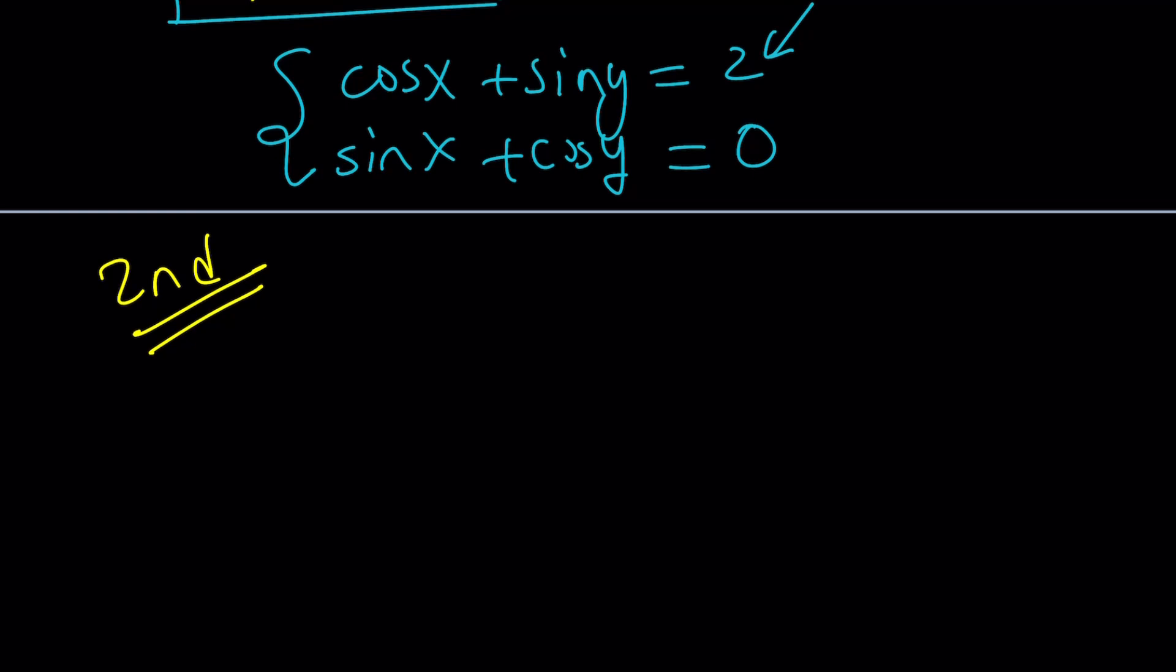Let's go ahead and take a look at the second method. And then we'll compare, and you'll get to decide which method you like better. Again, thank you for the comments. They are very enlightening. So we are given again this equation. Cosine x plus sine y is equal to 2, and we're supposed to evaluate sine x plus cosine y numerically.